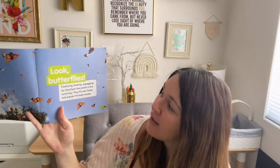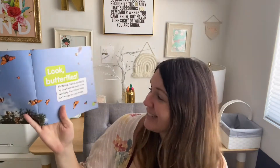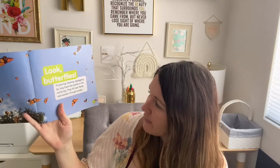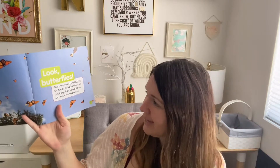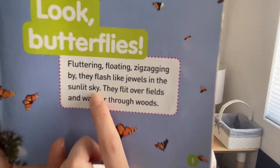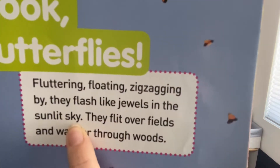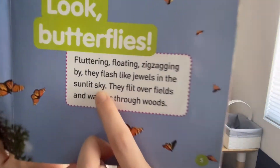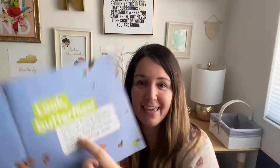Butterflies, fluttering, floating, zigzagging by. They flash like jewels in the sunlit sky. They flit over fields and wander through woods. What do you notice about this word? Sky. That's what we're talking about in phonics — the SK, the I, that Y is making the I sound.